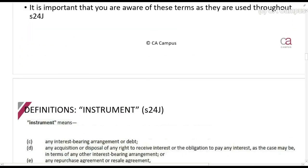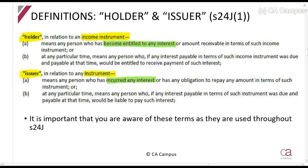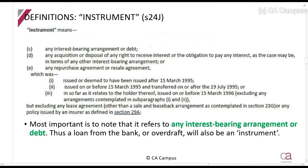We're now going to look at the definitions of 'instrument' and 'income instrument.' We always start with instrument because income instrument includes instrument. An instrument means any interest-bearing arrangement or debt, and any acquisition or disposal of any right to receive interest or obligation to pay interest, and any repurchase or sale agreement — but excluding any lease agreement. The most important one is: if it's an interest-bearing arrangement or debt, it is an instrument. So if I take out a bank loan and pay interest, that loan is an instrument. If I put money into a fixed deposit and earn interest, that is also an instrument.